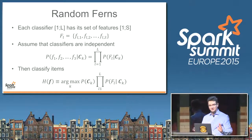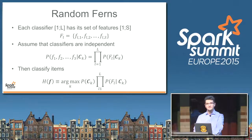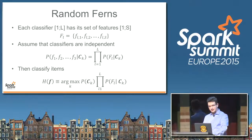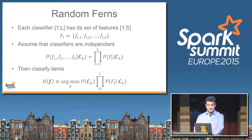We have L ferns, each of which uses S features out of N. So we have fewer features and fewer items. Each fern classifies an item in its own way. For each item, we have probabilities of an item i being classified to each of the classes. Now, it may look fancy, but if we change the big bold F with small bold f and fix the number of ferns with the number of features, we get our classical naive Bayes classifier.